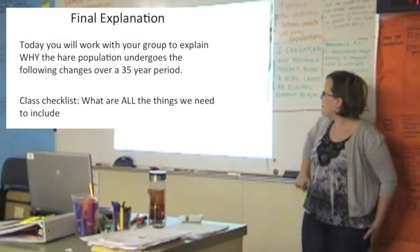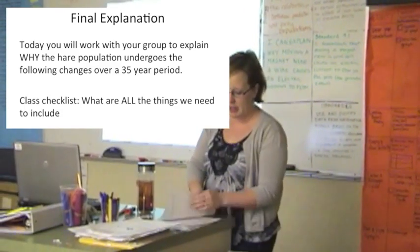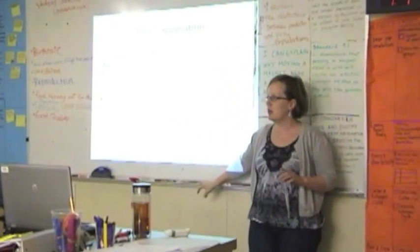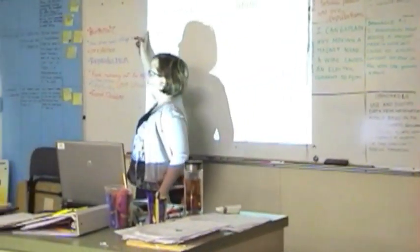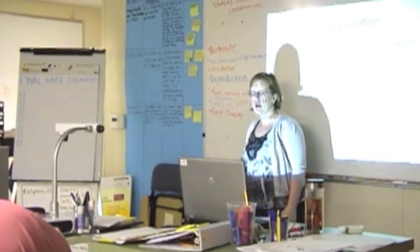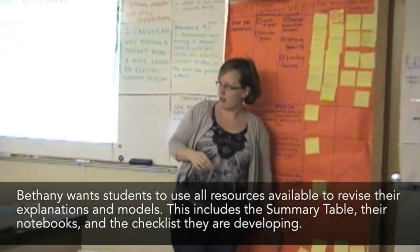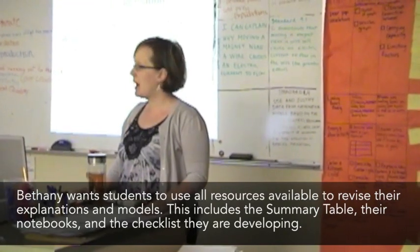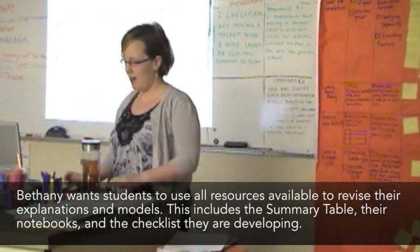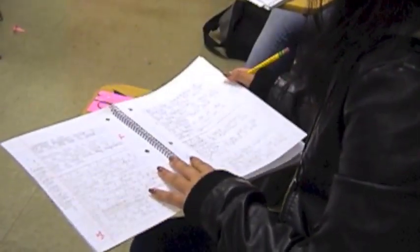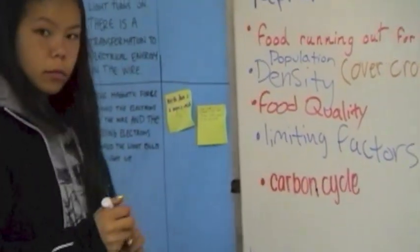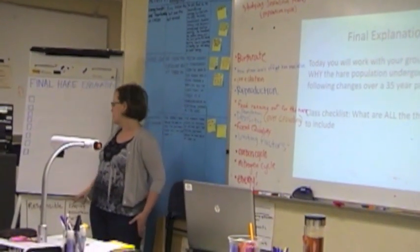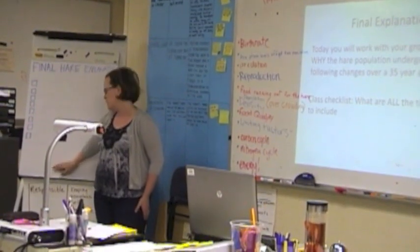So today you will work with your group to explain why the hair population undergoes the following changes over the 35-year period. Actually today, I printed out a graph that was zoomed in, so it's just an 18-year period. But we need to make a checklist of all the things we're going to include. And what I noticed is that a lot of you used yesterday's presentations as your main source of information to make this checklist. But what I also noticed is that I didn't see a lot of people using evidence from their summary chart from all the activities that we've done in their chart. So what I'd like to do is take about one more minute for you to look back for your summary chart, talk to somebody next to you, see what you can figure out that we haven't included yet. This list here, I'm going to transfer it if you think it matches, if it's something that we have to include in our final explanation. If it is, I'll put it here, and that means we will all be including those in our final explanation.